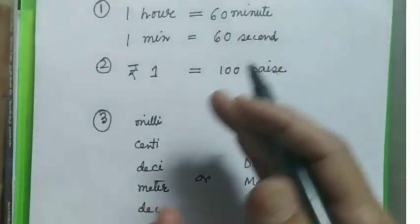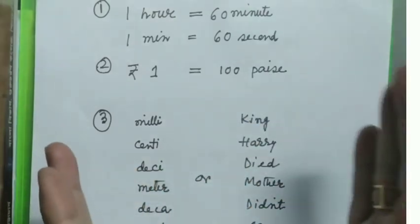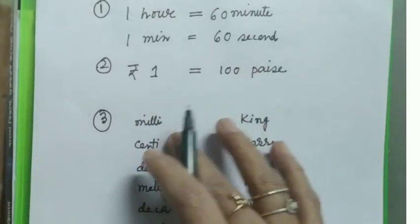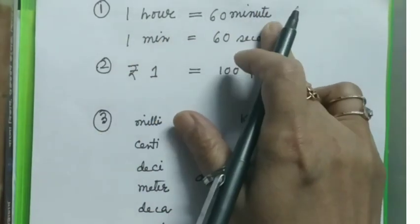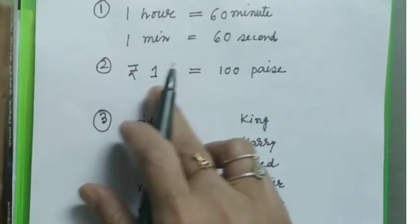Before starting sums on conversion, let's recall some simple things - just a revision of our old memories. One hour equals 60 minutes, one minute equals 60 seconds.